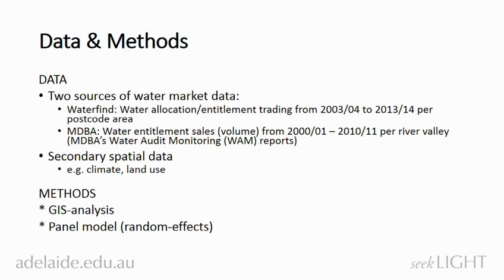We collected two major datasets on water trade information — one from a private water broker and one from the Murray-Darling Basin Authority. The data range over a 10-year period and comprise water allocation and water entitlement volumes per postcode level in the southern Murray-Darling Basin. In addition, we collected spatial data mainly from governmental sources such as CSIRO, including climate data, land use, and salinity data. We then integrated those datasets into a GIS system to map them.